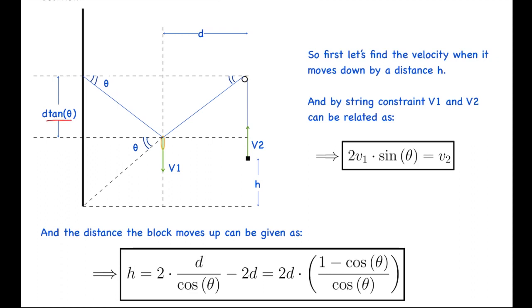Now, first let's find the velocity when it moves down by a distance h. By string constraint, v₁ and v₂ can be related as 2v₁ sin θ = v₂. Mind you, this is not v₁ sin θ = v₂—that would have been the case when this would have been a bead fixed to the string. But here this is a ring and the thread is passing through it.